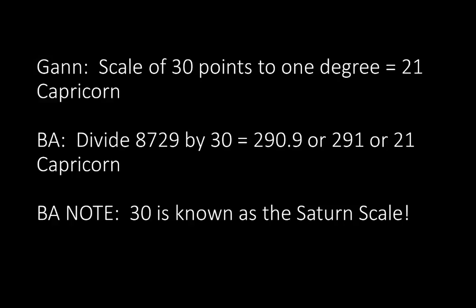Gann. This is from a second line in that coffee letter. Scale of 30 points to one degree equals 21 Capricorn. B.A. Take 8,729 and divide it by 30. B.A. We get 290.9 or 291, if you round up, which is 21 degrees Capricorn. All right. Now, why 30? I mean, he says scale of 30 points to one degree. I mean, why not a scale of 50 or 100 or 1,000, whatever. The reason is, and you'll understand this more later, is the 30 scale is the Saturn scale. The 30 scale is because Saturn takes 29.5 years to make a complete revolution. So he uses a scale of 30 for Saturn.